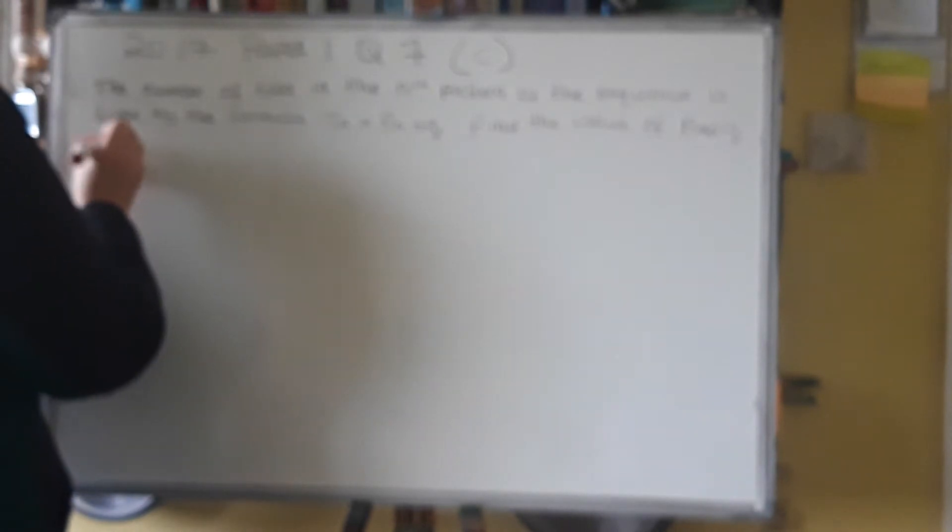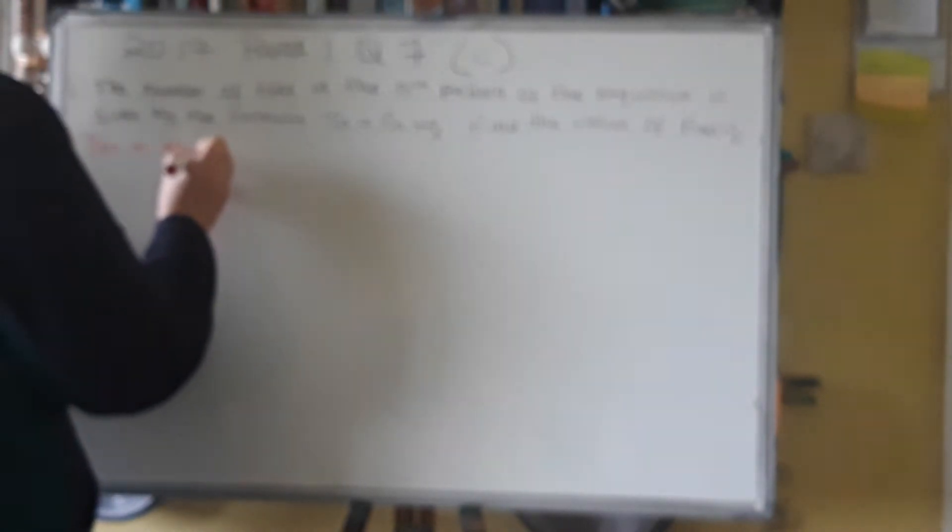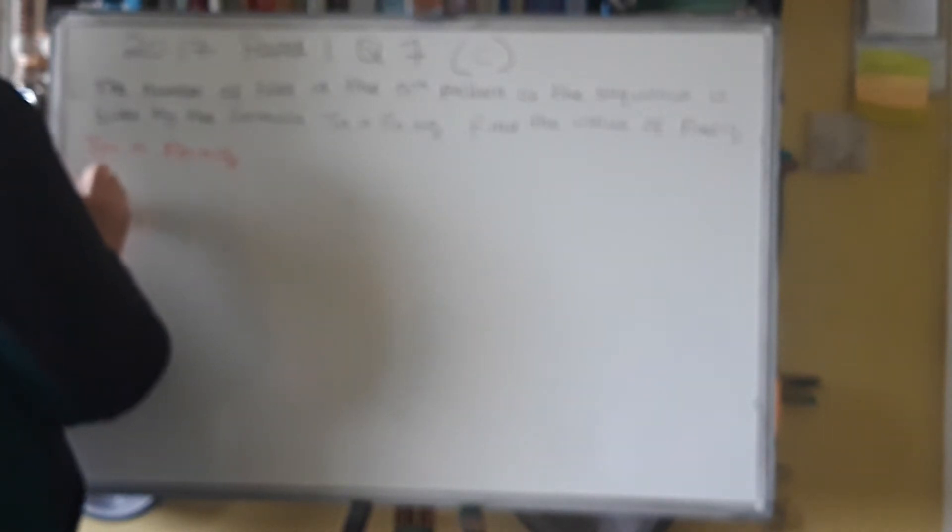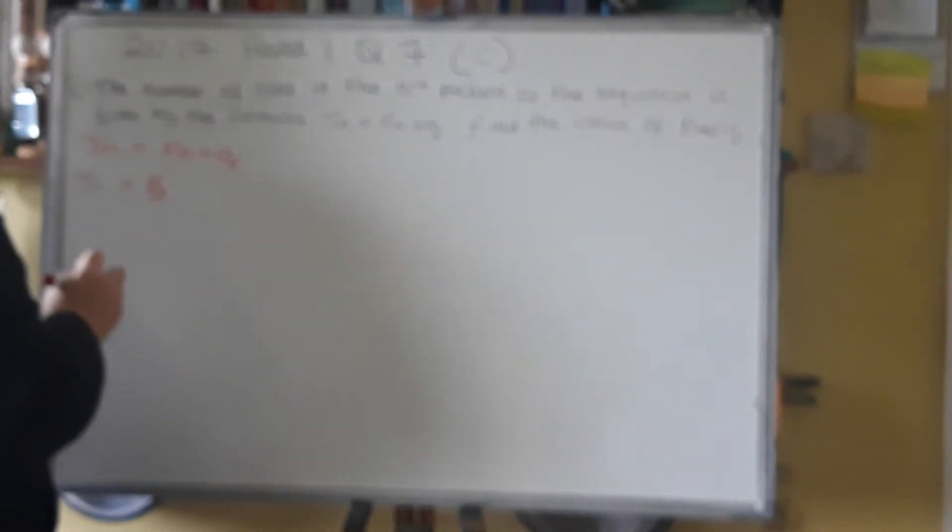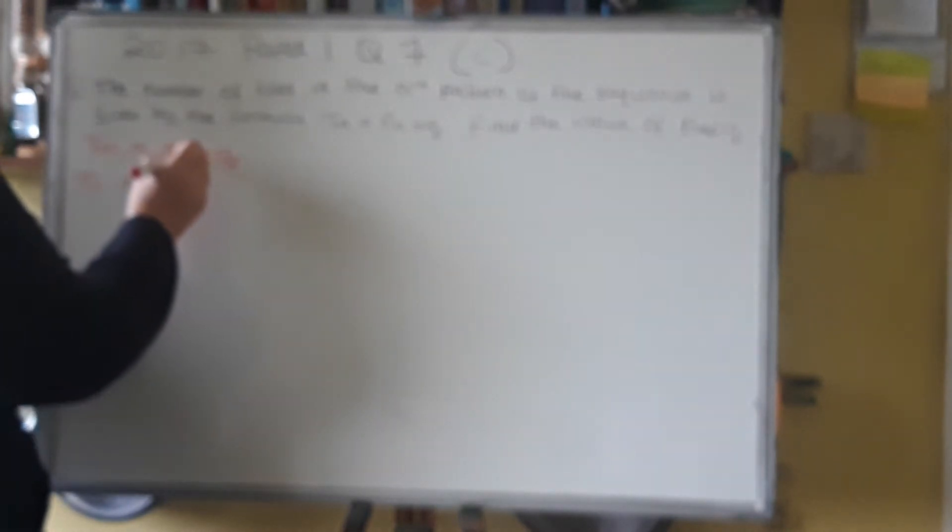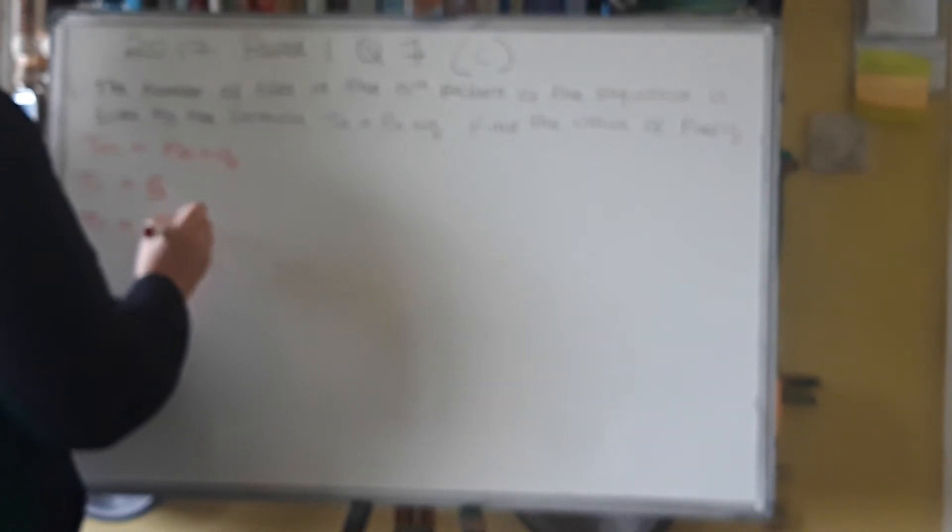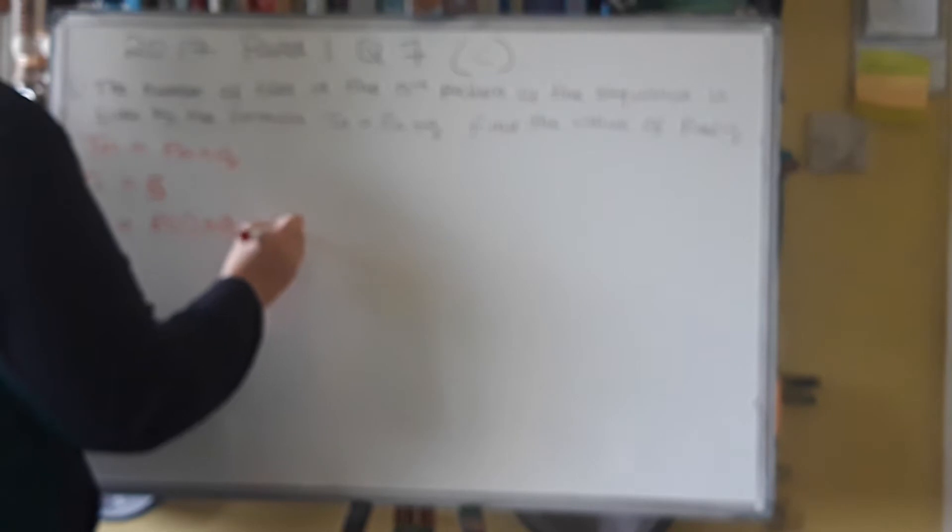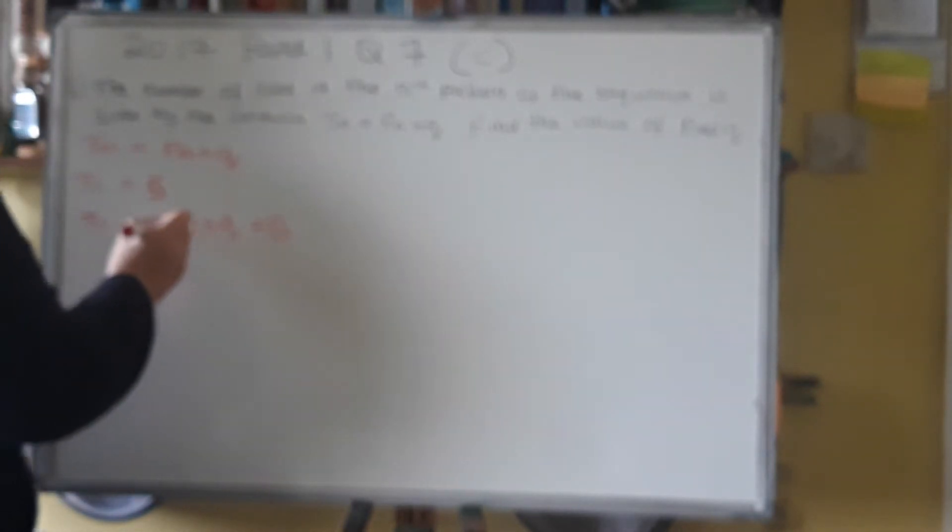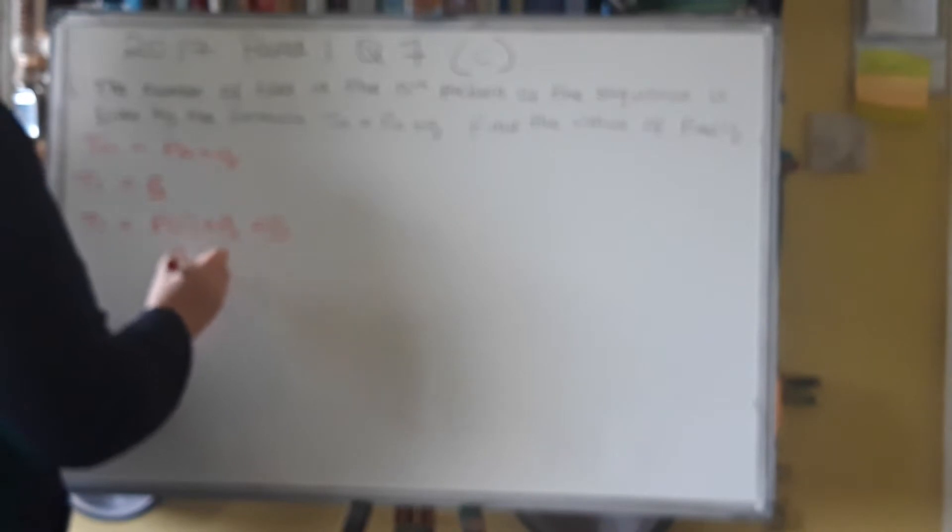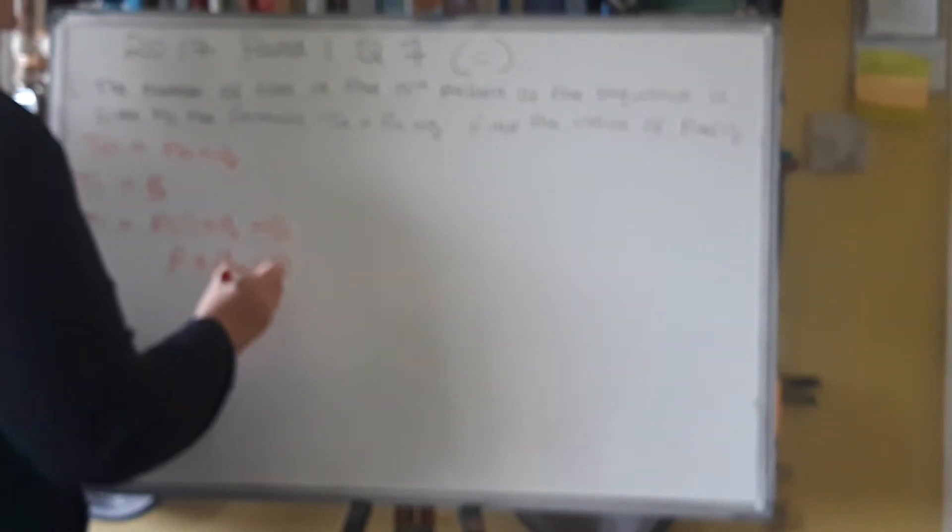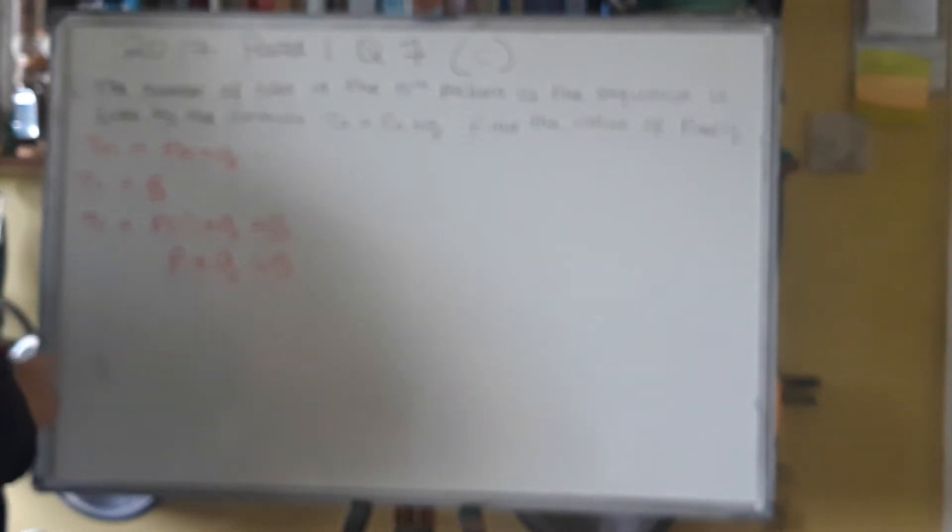So Tn is Pn plus Q. But you know that T1 is equal to 5, because we worked that out. So if you replace n with 1, so then you can work out that T1 is P times 1 plus Q equals 5. P by 1 gives you just P plus Q equals 5. So that's your first equation.